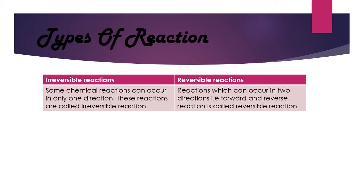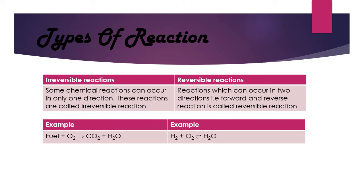In a reversible reaction, when the reaction goes from left to right, it is called a forward reaction. When it goes from right to left, it is known as a reverse reaction. So the reactant can be converted into the product, and the product can again be converted back into the reactant. For example, when you burn wood, combustion occurs producing carbon dioxide and water, and ashes are produced. You cannot reconvert those ashes back into wood — so combustion is an irreversible reaction.